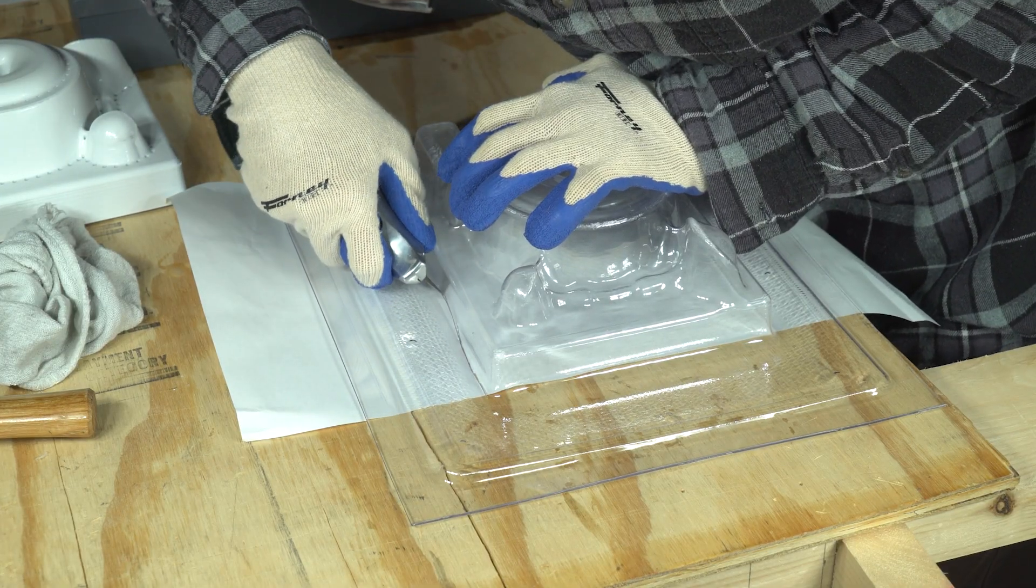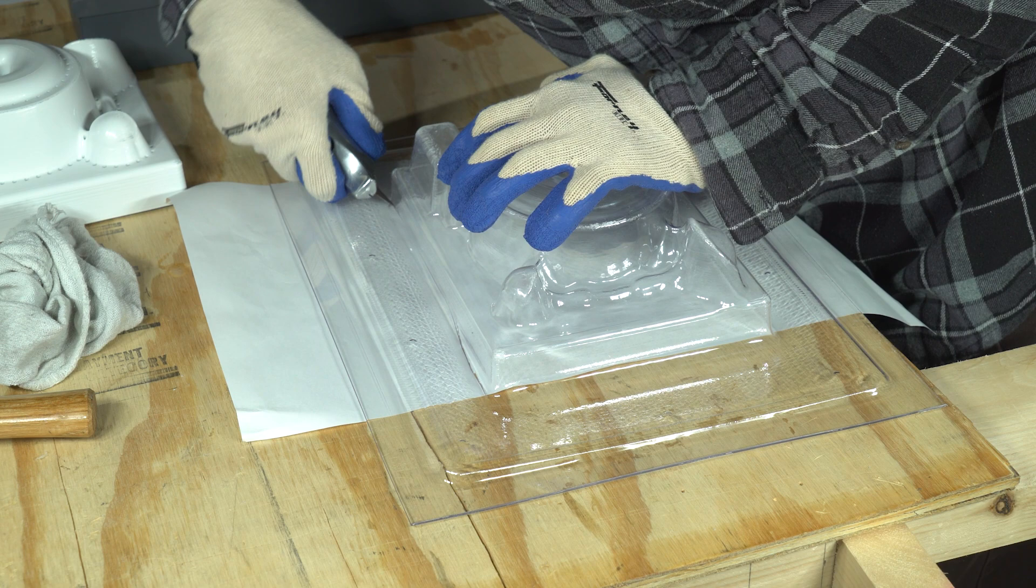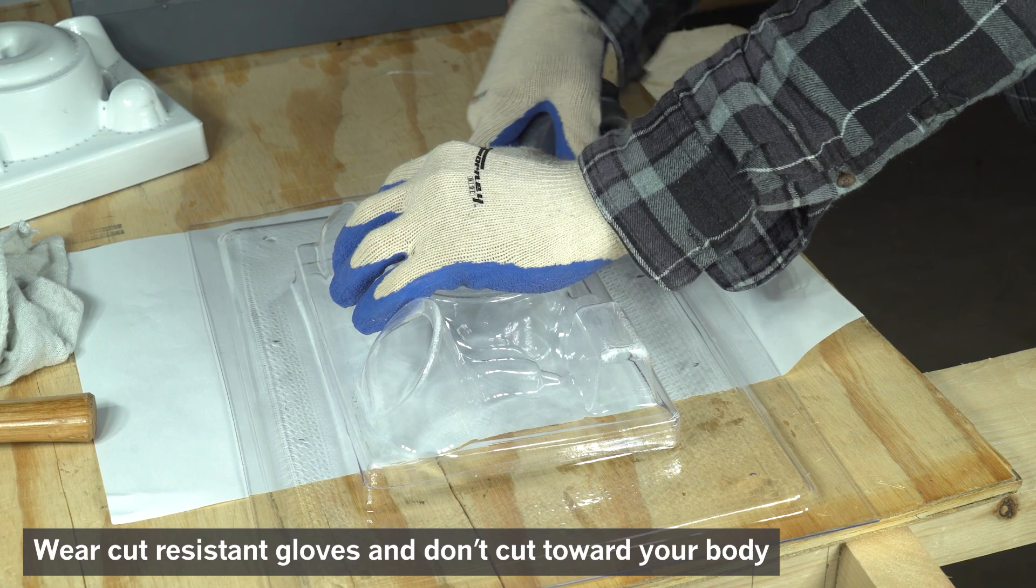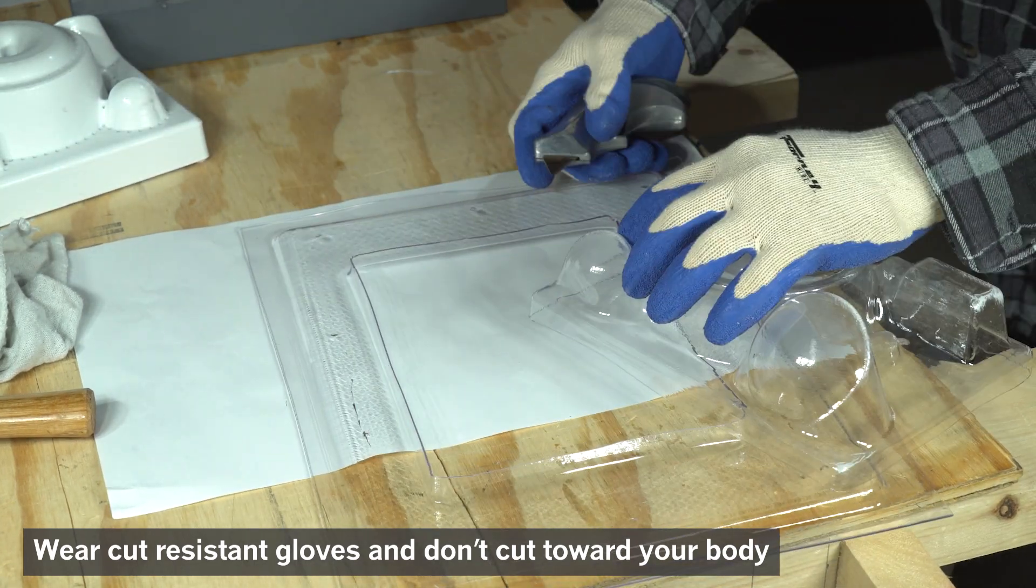Using a utility knife, I cut just above the base of the mold where the plastic is flat. Thick plastics can be hard to cut because the flat sides cut easily, and the corners are stiff and hard to cut.